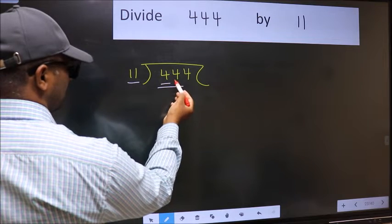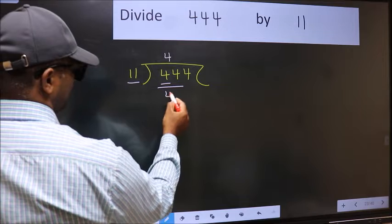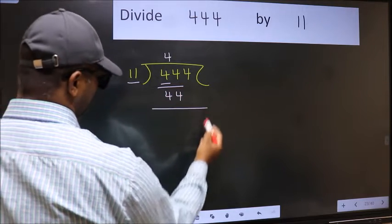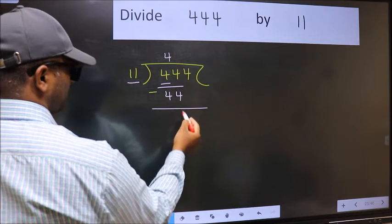44. When do we get 44 in 11 table? 11 fours 44. Now you should subtract 44 minus 44, 0.